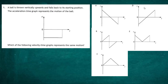Question 1 from Paper 1 of the 2022 Higher Physics examination from the SQA. A ball is thrown vertically upwards and falls back to its starting position. The acceleration-time graph represents the motion of the ball. Which of the following velocity-time graphs represents the motion? We are given five graphs on the right.